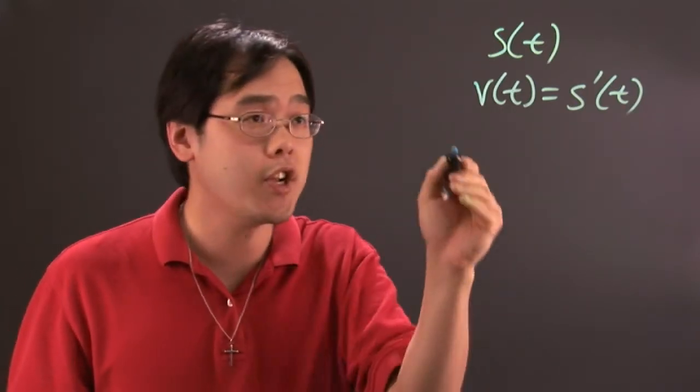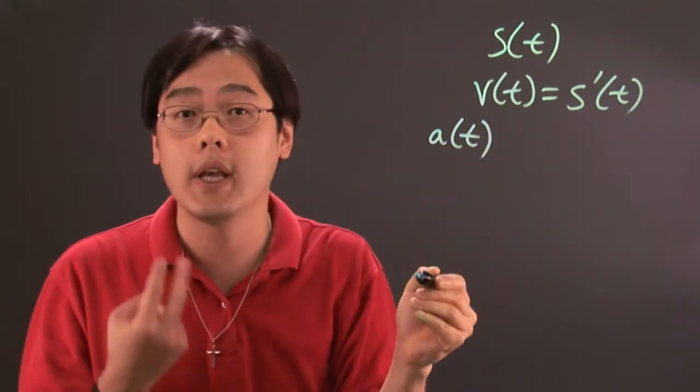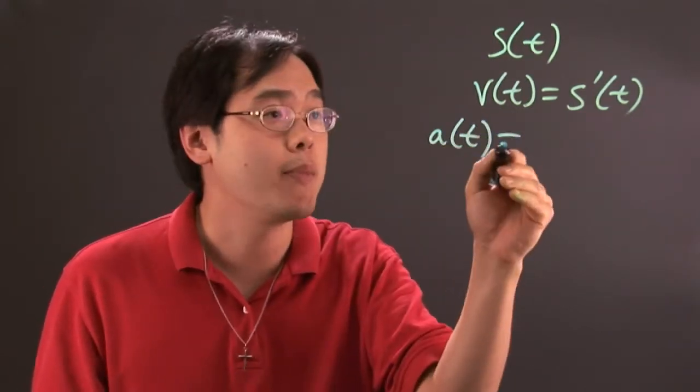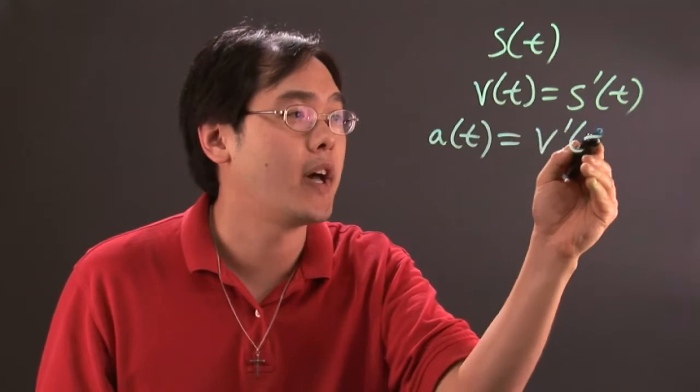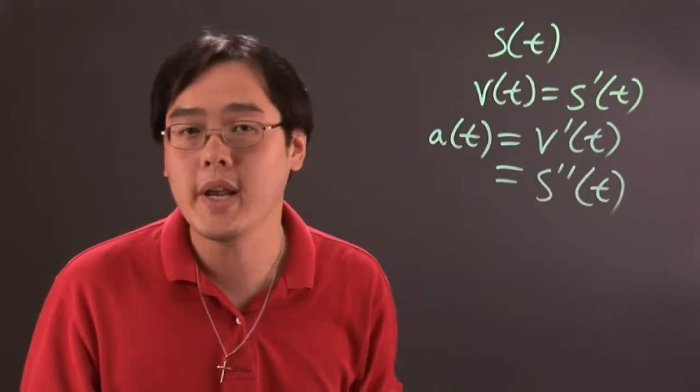Now where acceleration comes in as you know is denoted by a, but it can be thought of two ways. It can be rewritten as the derivative of the velocity function or it can be thought of as the second derivative of the original speed function.